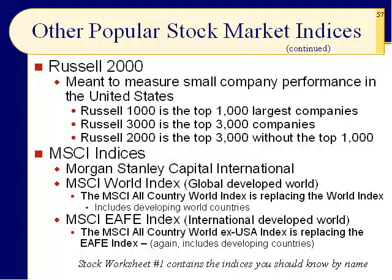In the face-to-face class, we would stop and do worksheet number one right now — you can do that now or later. Those are the eight indices I want you to remember: the Dow, S&P 500, NASDAQ, Russell 2000, the EAFE (being replaced by the All-Country World Index), the Wilshire 5000, and the Wilshire 4500 — which are officially the Dow Jones U.S. Total Stock Market Index and the Dow Jones Completion U.S. Total Stock Market Index. All you have to do is be able to identify them.